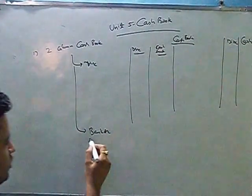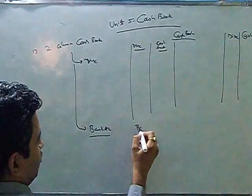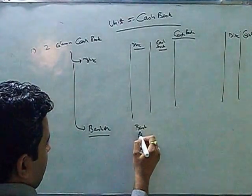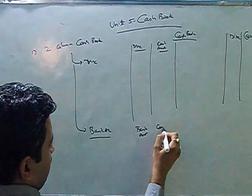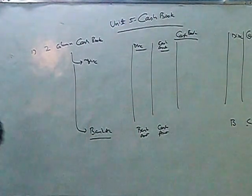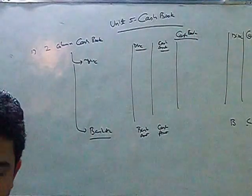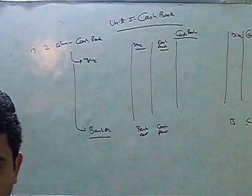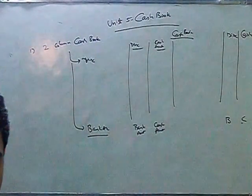Over there when we use the bank account then you will have columns for bank amount, cash amount and also bank and cash. So either you will have a column for bank or you will have a column for discount. You cannot have a column for both of them.